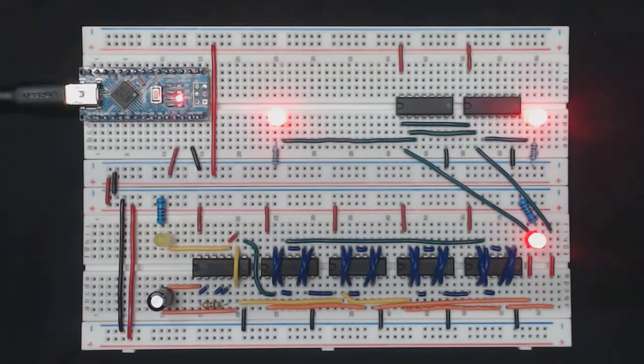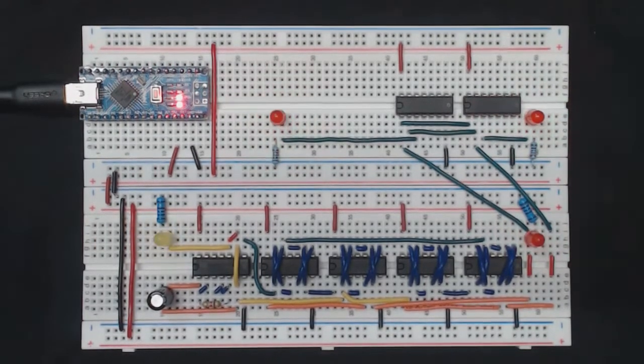Hi guys and welcome to video 17 in the but how do it know companion video series. In the last video we built a clock which is running here in front of me. This is the exact circuit that we built before with the exception of this yellow LED that I added to help us visualize the double frequency clock that is sourcing.